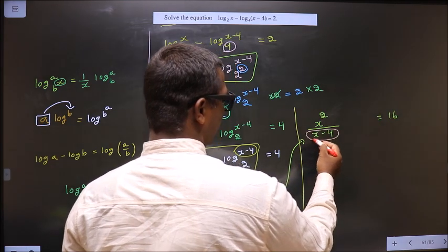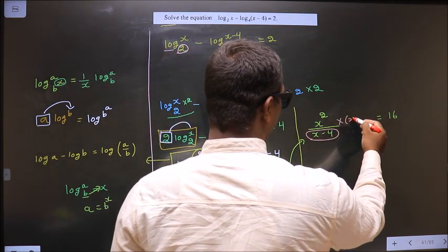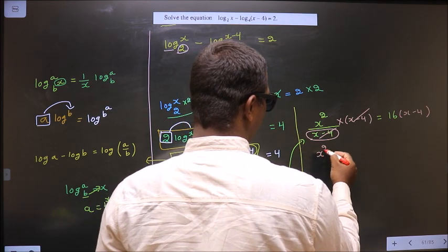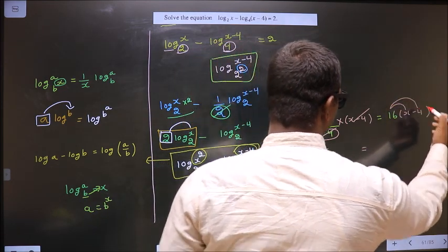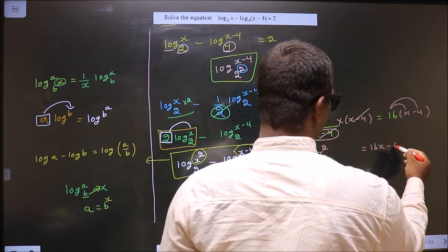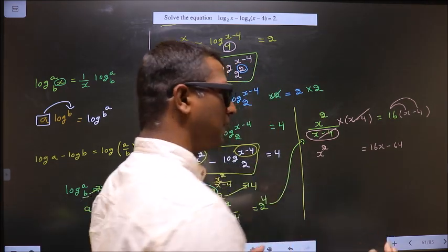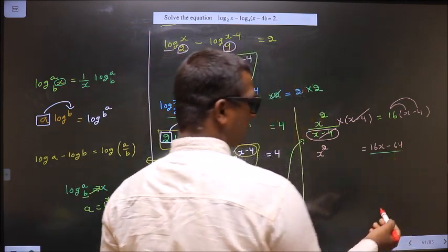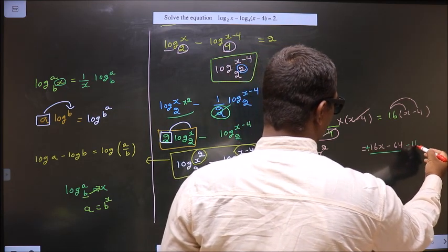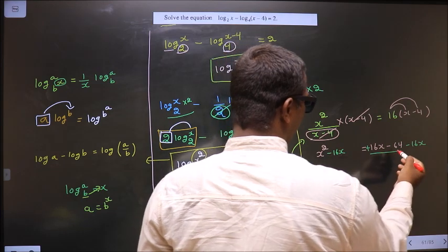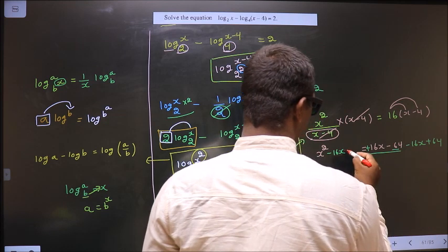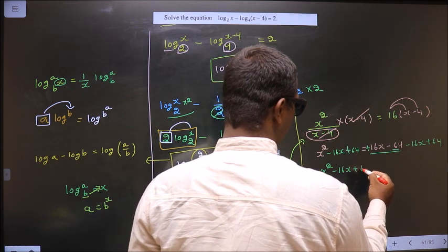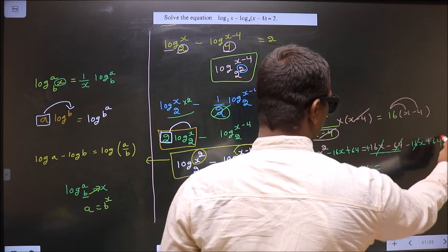Now we remove the denominator by multiplying both sides by (x minus 4). It cancels out, giving x-squared equal to 16(x minus 4). Opening the bracket: x-squared equals 16x minus 64. Bringing all terms to one side by subtracting 16x and adding 64 on both sides gives x-squared minus 16x plus 64 equal to 0.